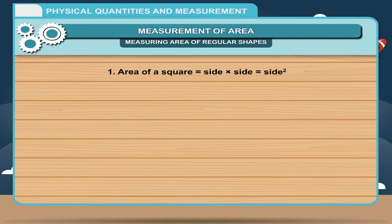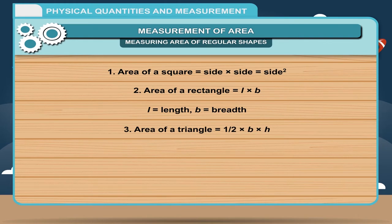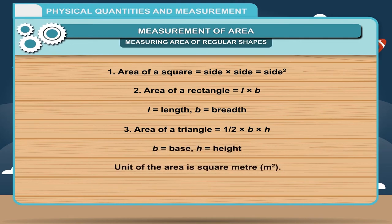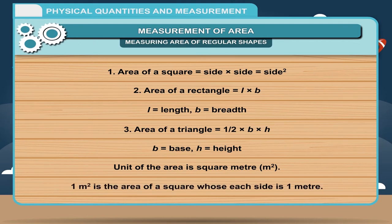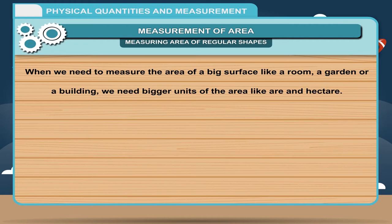Area formulas: 1. Area of a square = side × side = side². 2. Area of a rectangle = length × breadth (L × B). 3. Area of a triangle = ½ × base × height. The unit of area is square meter (m²). 1 m² is the area of a square whose each side is 1 meter. When measuring the area of a big surface like a room, a garden, or a building, we need bigger units of area like are and hectare. 1 are = 10 m × 10 m = 100 m². 1 hectare = 100 m × 100 m = 10,000 m².